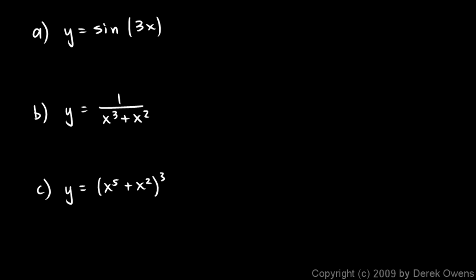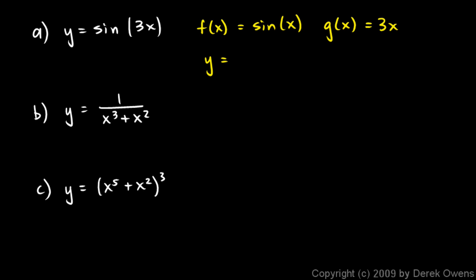y equals sine of 3x. I'll think of f as my outer function: f of x is the sine function, so f of x equals sine x. My inner function g is simply 3x. So y can be written as f of g of x — f is the sine function applied to g of x, which is just 3x. So y is sine of 3x, written as one function within another. You could also say y is f composed g.